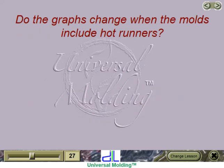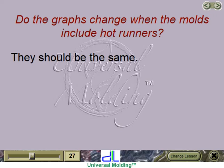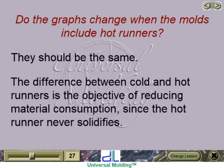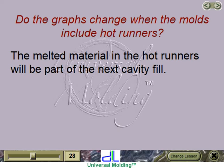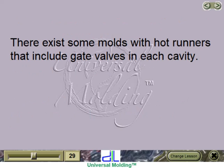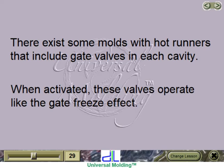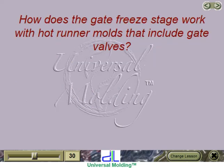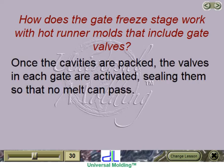Do the graphs change when molds include hot runners? They should be the same. The difference between cold and hot runners is the objective of reducing material consumption, since the hot runner never solidifies — the melted material in the hot runners becomes part of the next cavity fill. Even with hot runners, you still must inject, pack, and hold until the gates freeze. Some molds with hot runners include gate valves in each cavity. When activated, these valves operate like the gate freeze effect, sealing so that no melt can pass.